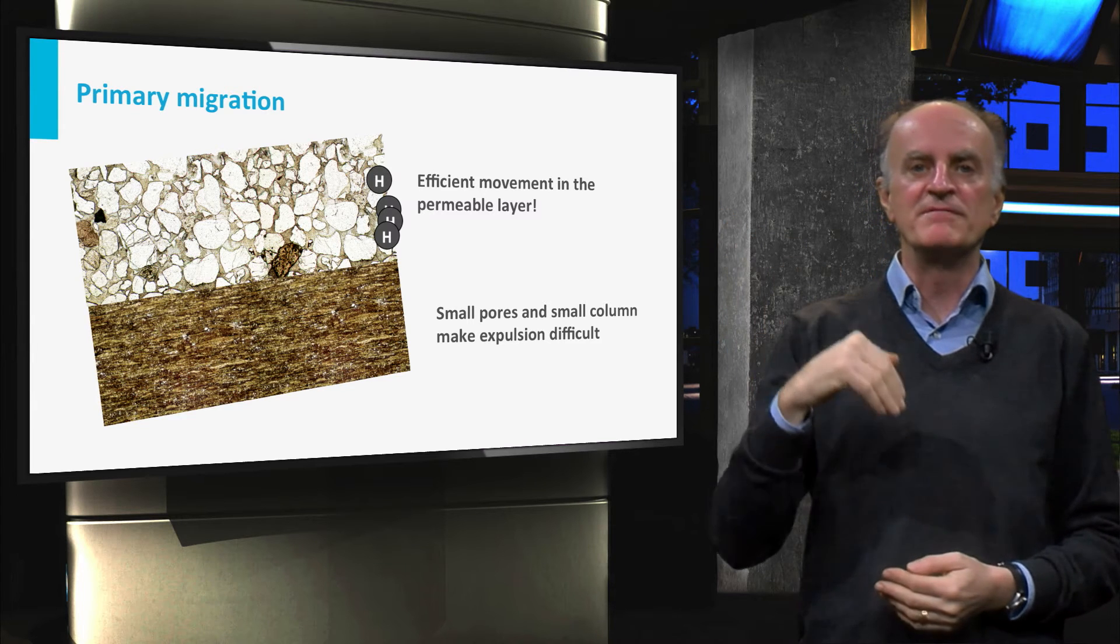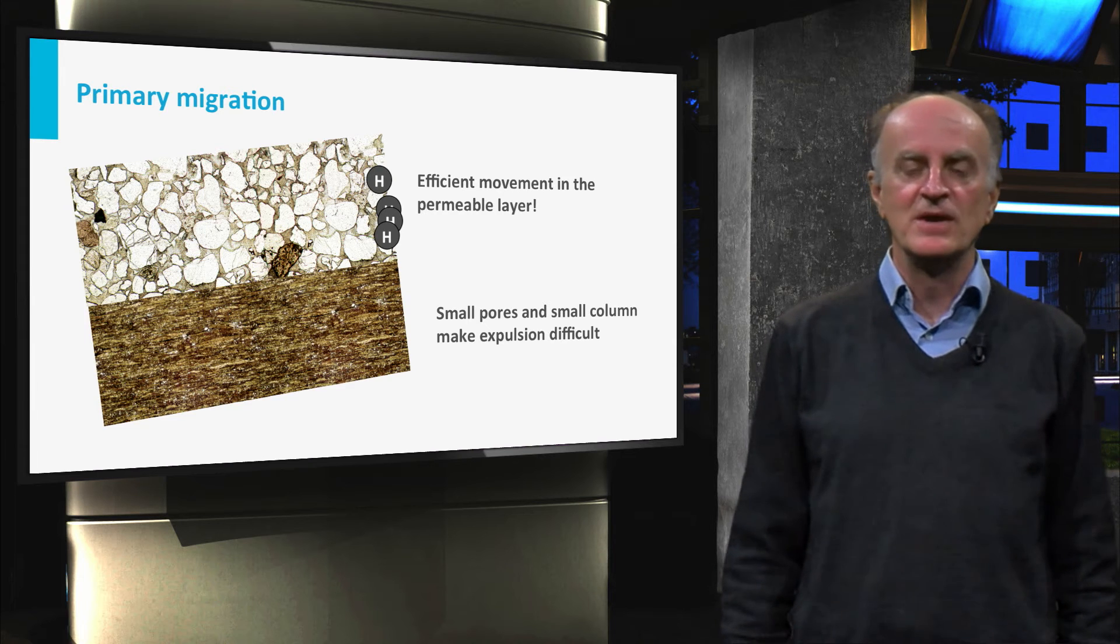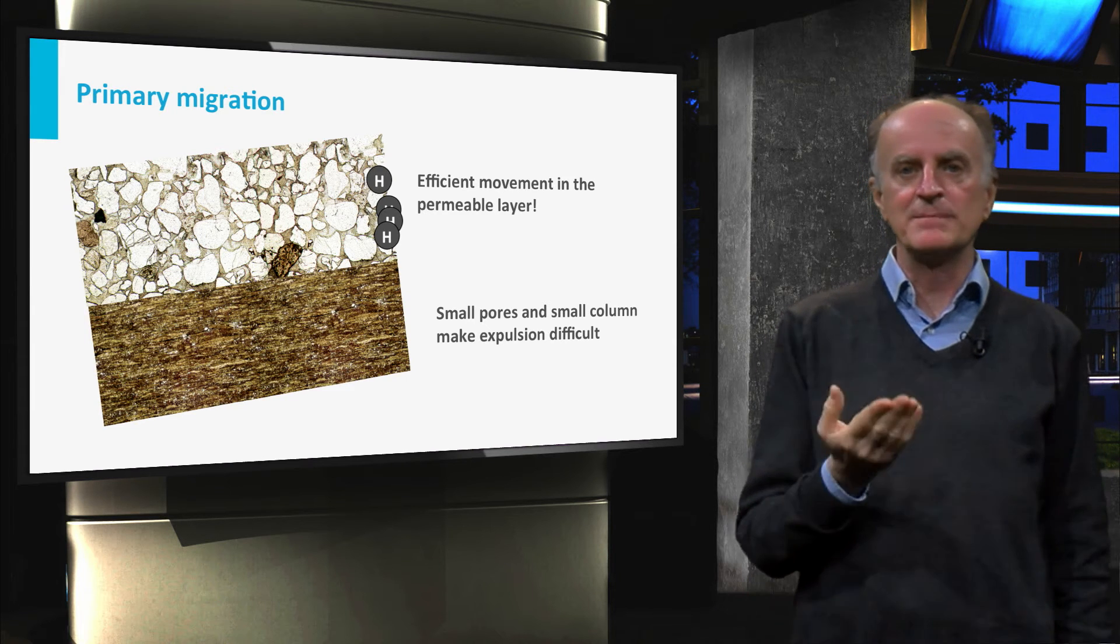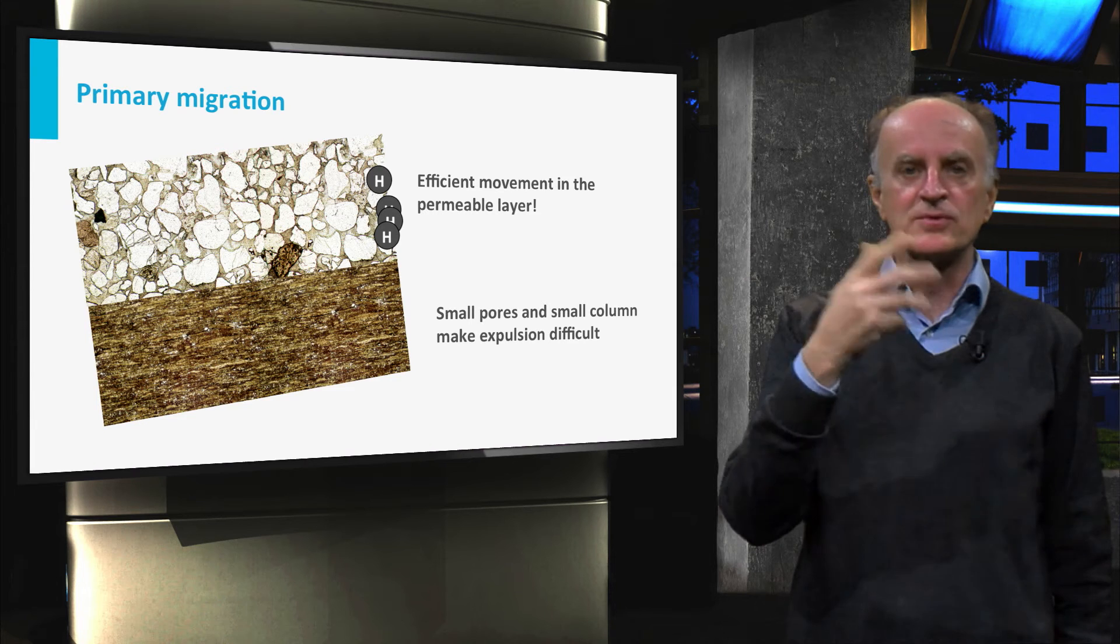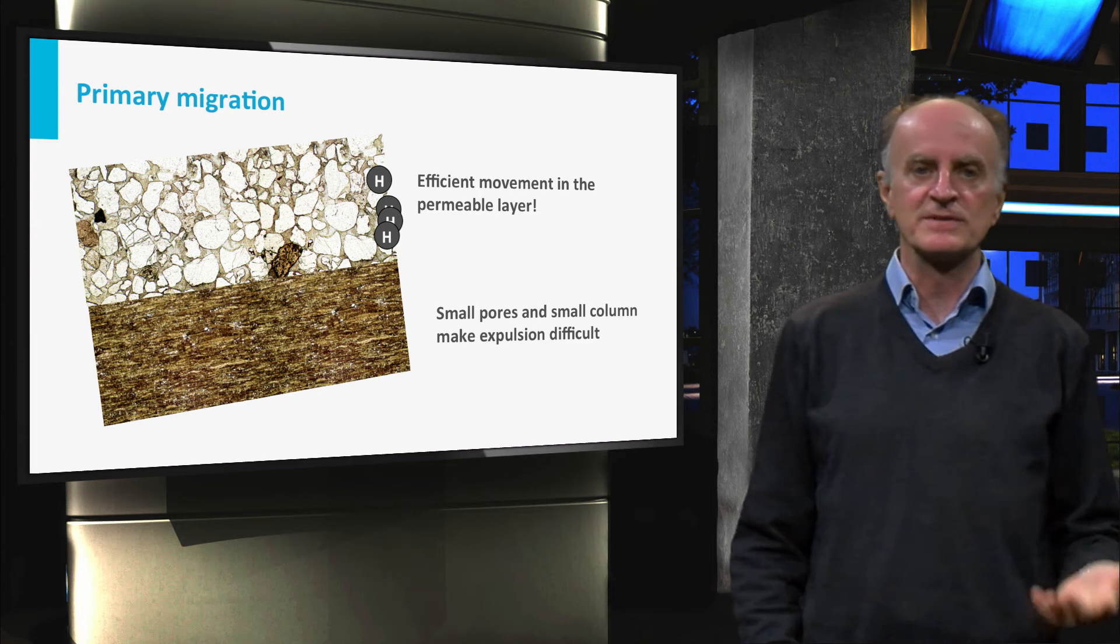Their movement is favored by much larger pores and an increase in hydrocarbon column. Following lines of highest gradient, petroleum drops will move upward and eventually end up in the reservoir or, if a trap is not encountered, at the surface of the earth.